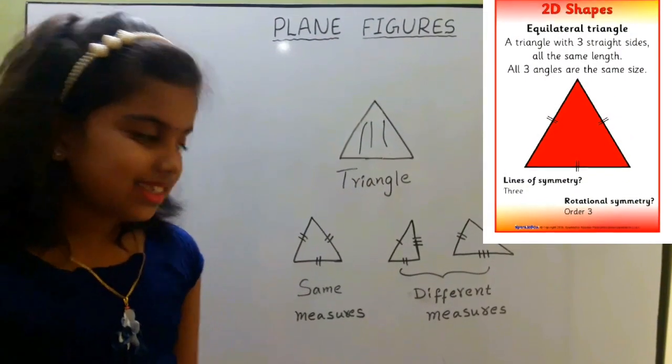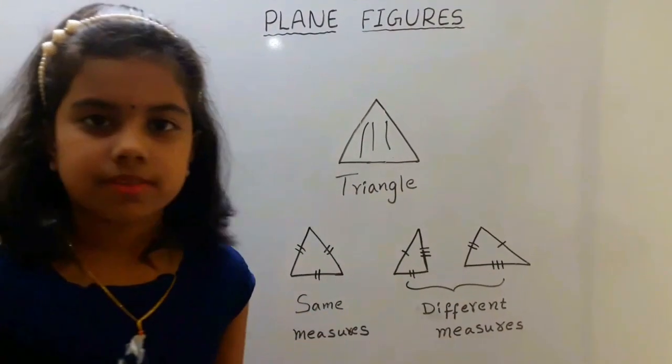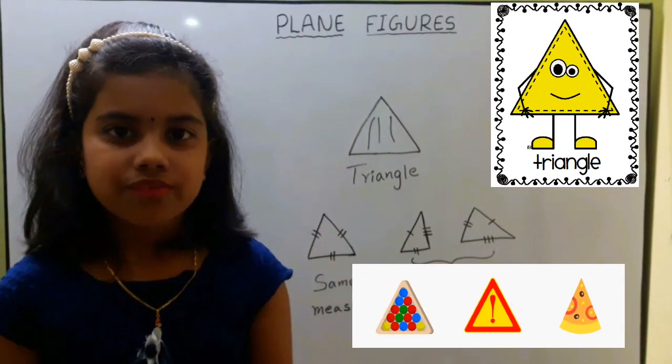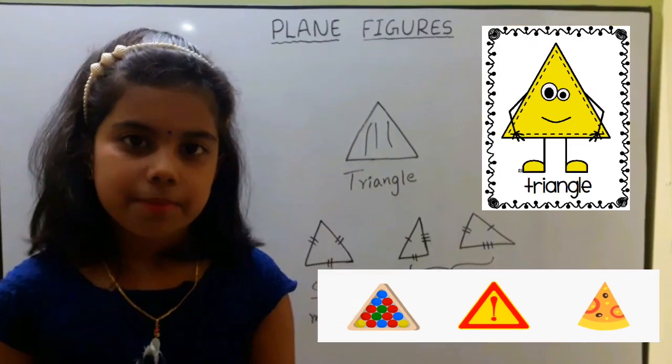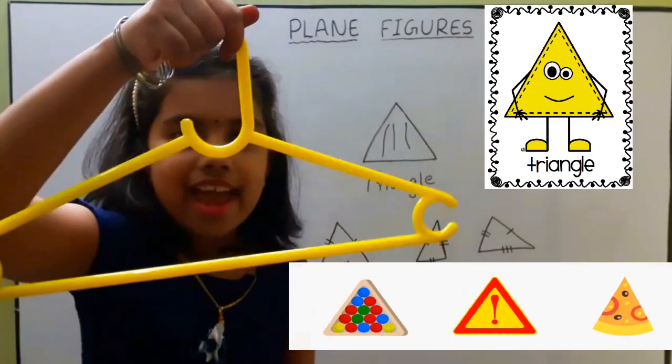Its sides can be same or different values. Examples of triangle in real life is pizza slice and triangular sign.